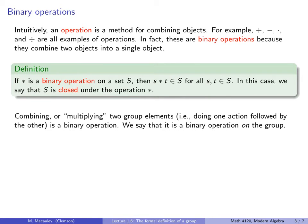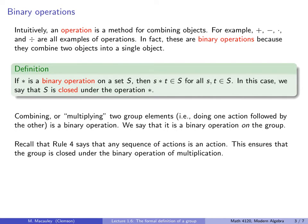Now combining or multiplying two group elements, i.e. doing one action followed by the other, is a binary operation. We say that it is a binary operation on the group because we want to think of a group as a set. Recall that our rule four in our informal definition of a group says that any sequence of actions is an action. This ensures that the group is closed under the binary operation of multiplication, or of combining, if you prefer that. But we're going to start using multiplication most of the time.